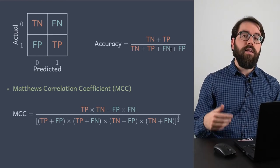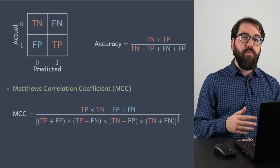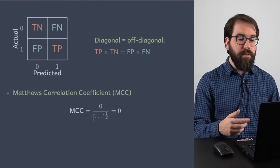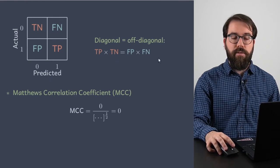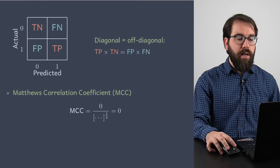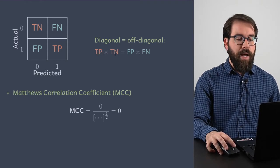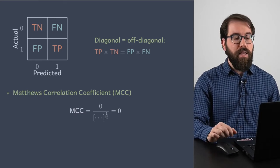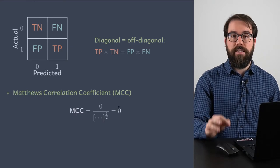Let's take a look at the limits of the Matthews correlation coefficient — when it's minus 1, when it's 1, and when it's 0. The first case is when the product of the diagonal terms equals the product of the off-diagonal terms. Since the numerator of the MCC is the diagonal product minus the off-diagonal product, you get 0 in the numerator. The denominator is always positive and not 0 in this case, so you end up with an MCC exactly equal to 0.